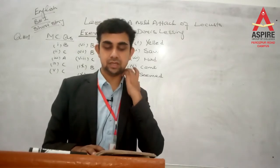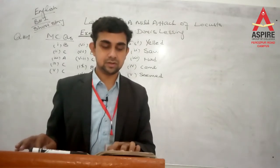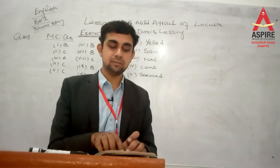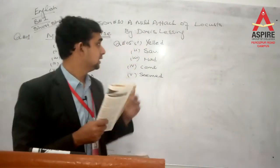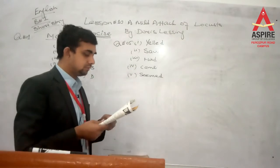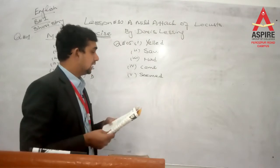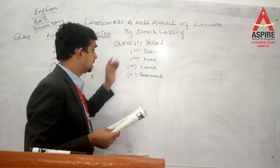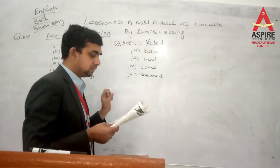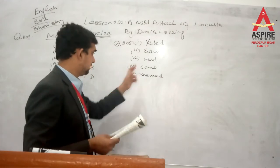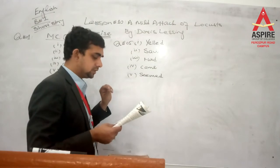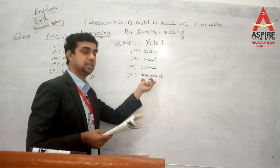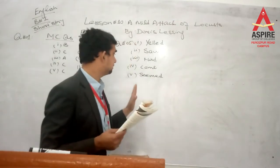Question number 5: Write down the correct form of the verb in each sentence. You need to change the bracketed first-form verbs into their second form. Number 1: 'yell' → yelled. Number 2: 'see' → saw. Number 3: 'has' → had. Number 4: 'come' → came. Number 5: 'seem' → seemed. You can also see these solved on the whiteboard.